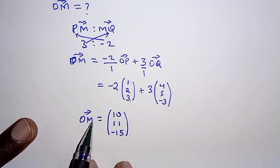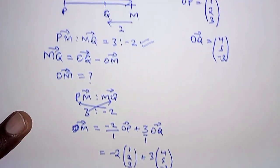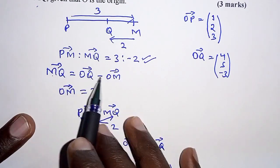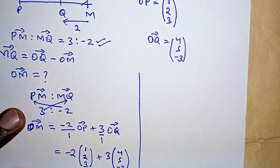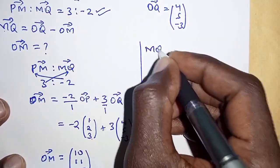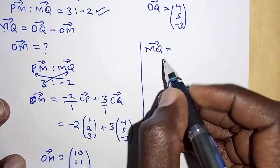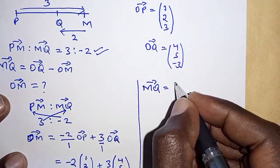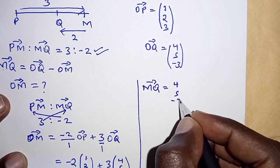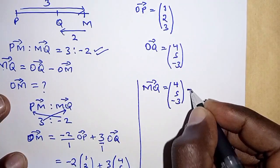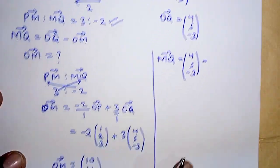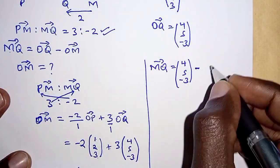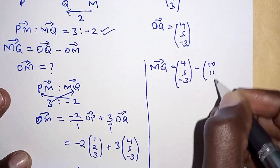Now having obtained OM we can now come back to this part. Our task here was to get MQ and MQ is OQ minus OM. MQ is OQ minus OM, but OQ we already have, OQ is (4, 5, -3), minus OM and OM we have already worked out, OM is (10, 11, -15).